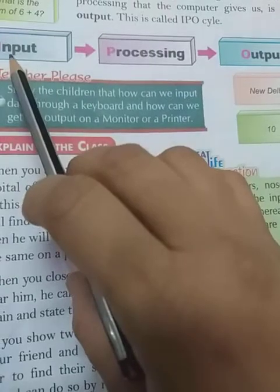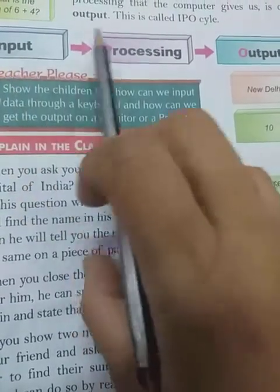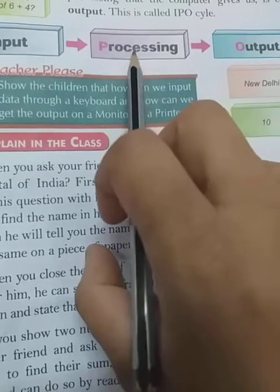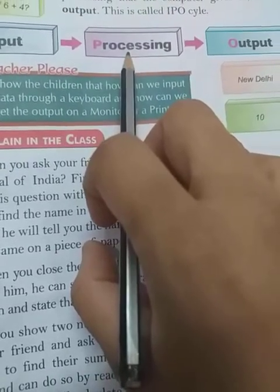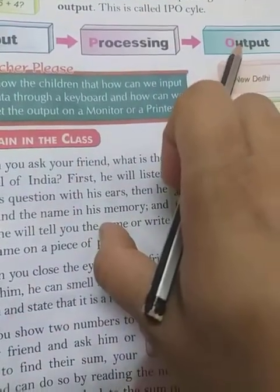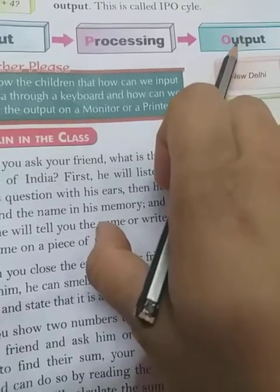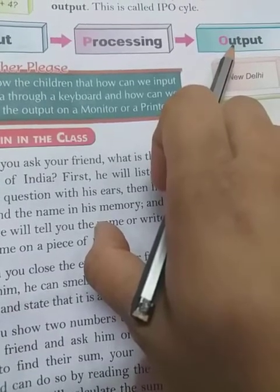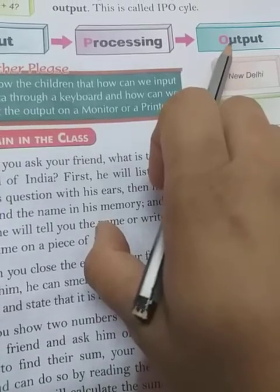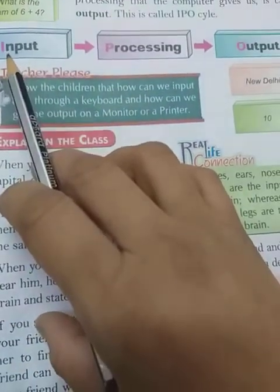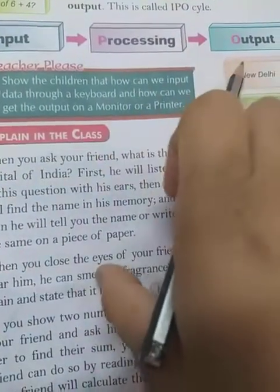When we give information to the computer, we call it input. When we give the task and the computer performs, we call it processing, and the result given out is the output. I hope you all understand very well about input, processing, and output.